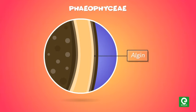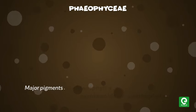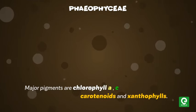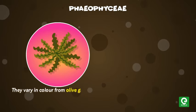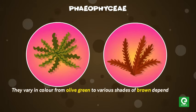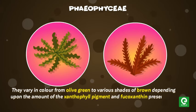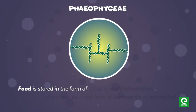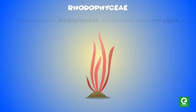The outer cell wall layer is made of a gelatinous substance called algin. Major pigments are chlorophyll a, c, carotenoids, and xanthophylls. They vary in color from olive green to various shades of brown depending upon the amount of the xanthophyll pigment fucoxanthin present in them.